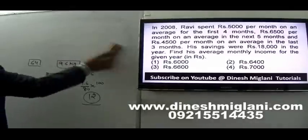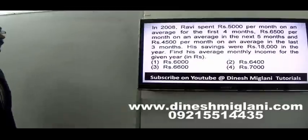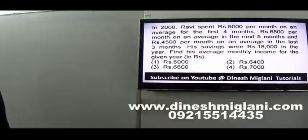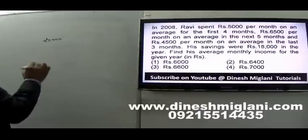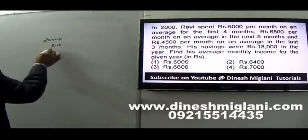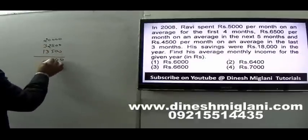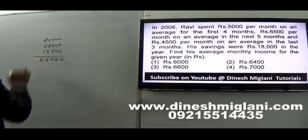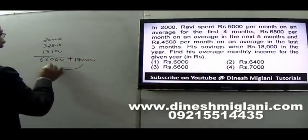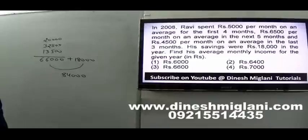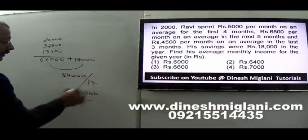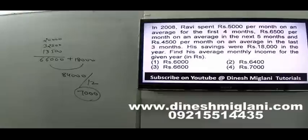Question 15: In 2008, Ravi spent 5,000 per month for the first 4 months, 6,500 per month for the next 5 months, and 4,500 per month for the last 3 months. His savings were 18,000 for the year. Total expenditure: (4 into 5,000) plus (5 into 6,500) plus (3 into 4,500) equals 20,000 plus 32,500 plus 13,500 equals 66,000. Total income: 66,000 plus 18,000 equals 84,000. Average monthly income: 84,000 divided by 12 equals 7,000.